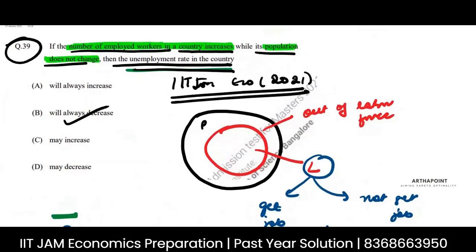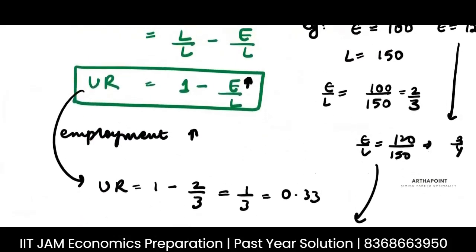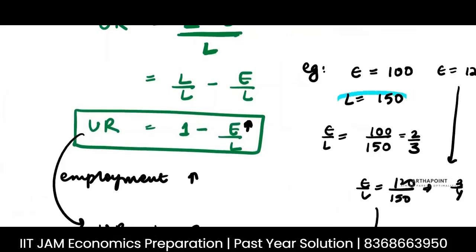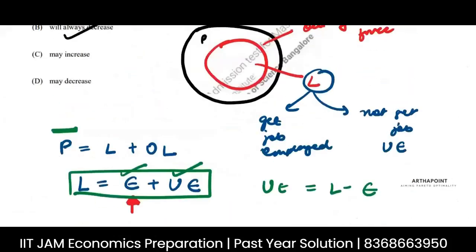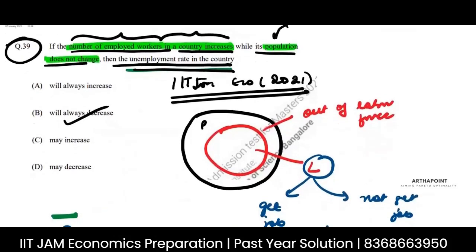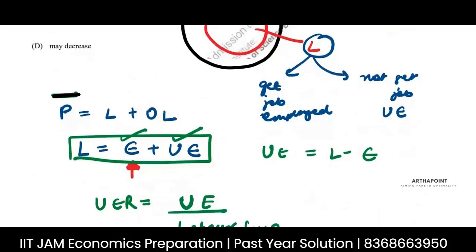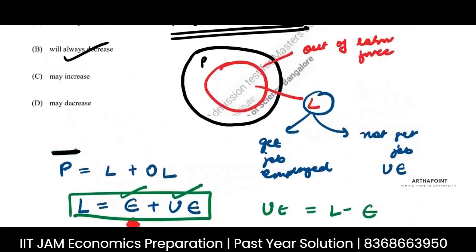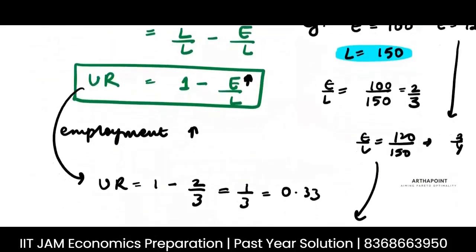But when the question says that the number of employed workers has increased, I assumed in the background that the labor force is constant. The question only tells me that my population is constant. However, it can be the case that from the same population, more people have joined the labor force. So if more people join the labor force — if labor force increases and out-of-labor-force decreases — then I will not be sure.